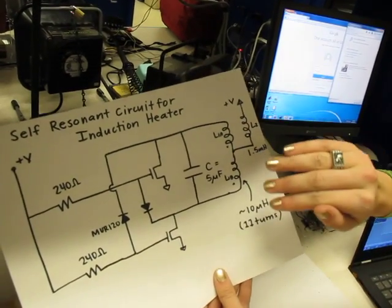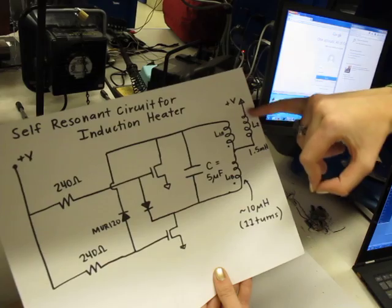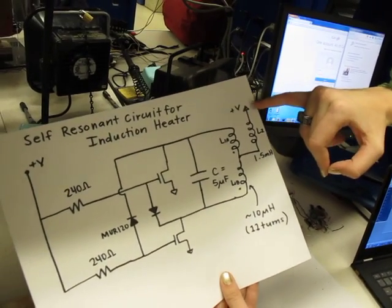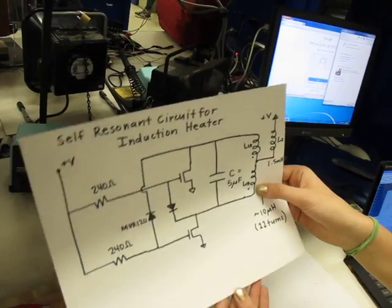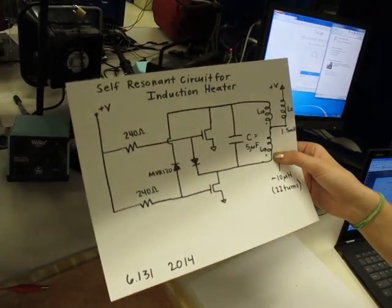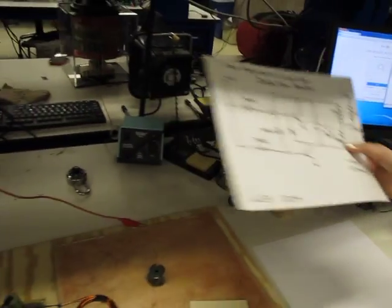And so it actually operates at its resonance point. So it's only pulling like two amps from the actual power source, but it gets like 10 amps ramping through this loop, which maximizes how hot this thing can get. Cool, outstanding. You want to show us?